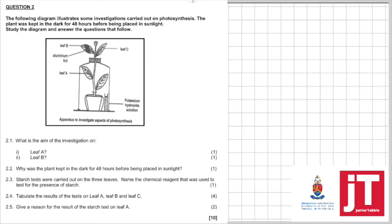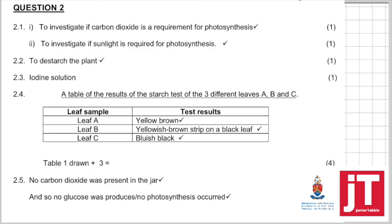Let's go to question 2.5. Give a reason for the result of the starch test on leaf A. They want to know why did the leaf turn yellowish-brown, and the reason for that is you can see the potassium hydroxide, like I mentioned, absorbs the carbon dioxide. If there's no carbon dioxide, photosynthesis cannot take place, and so no starch will be produced, and so, of course, the test will be a negative test, which will be yellowish-brown.